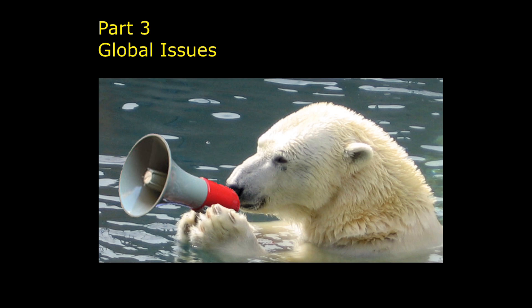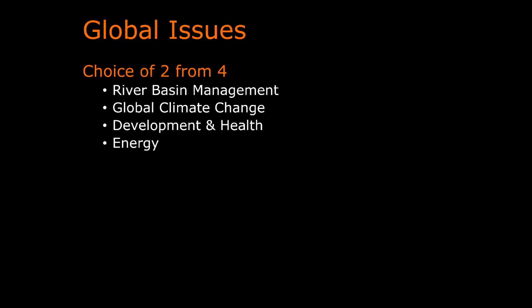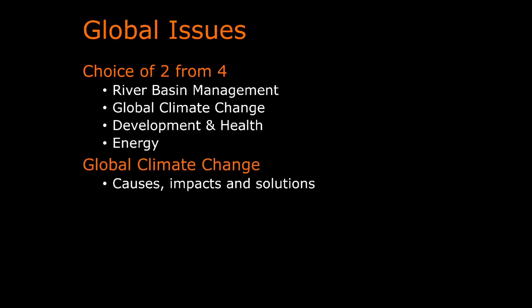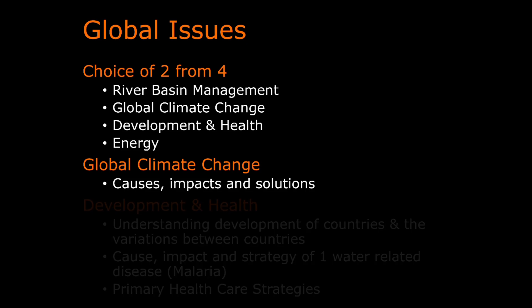Part three is global issues. You have the choice of two from four different topics: river basin management, global climate change, development health, and energy. The main ones I teach are global climate change - covering the causes, impacts and solutions of global climate change around the world - and development health. This covers the development of countries and variations between them, how they've developed differently, the cause, impact and strategy of one water-related disease, normally malaria but also cholera or others, and primary healthcare strategies - what they are, how they've been implemented, and how they benefit people in developing countries.